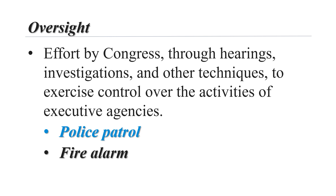The goal of police patrol oversight is to deter problems before they arise or to catch them before they cause significant damage. Another form of oversight is triggered by fire alarms, in which the two branches react to urgent events, emergencies, or scandals — for instance, the 2010 Gulf of Mexico oil spill or Russian meddling in the 2016 election. The media also plays an important role in such oversight, using the Freedom of Information Act to access documents the federal government often keeps secret — uncovering scandals before routine police patrol oversight can reveal them.